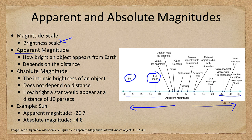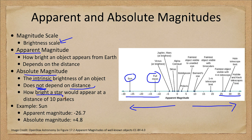The absolute magnitude, on the other hand, is a measure of intrinsic brightness — how much energy the star is actually putting out. It does not depend on distance. It is defined as how bright a star would be if you moved it to a distance of 10 parsecs, or about 32 light years away.